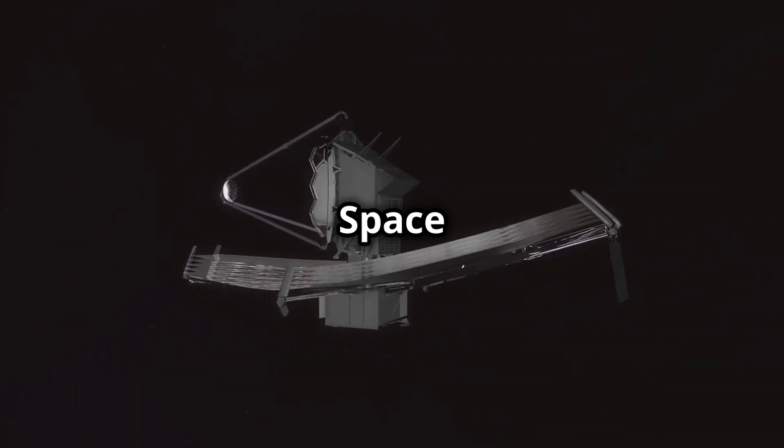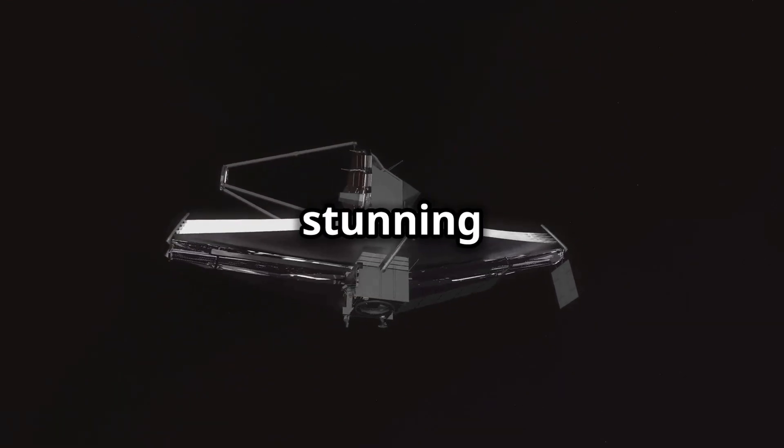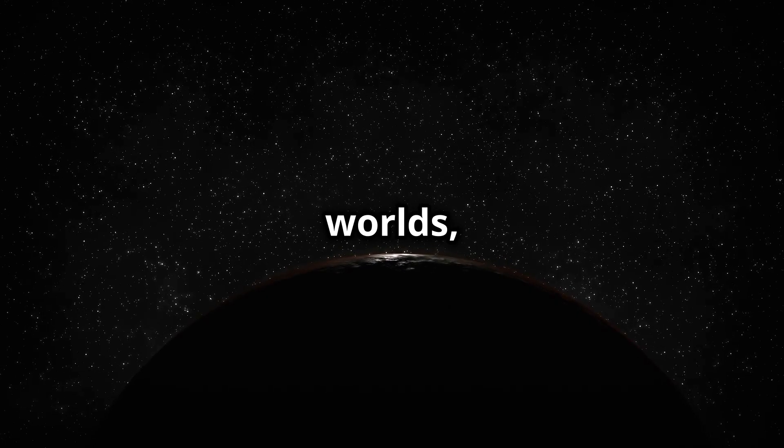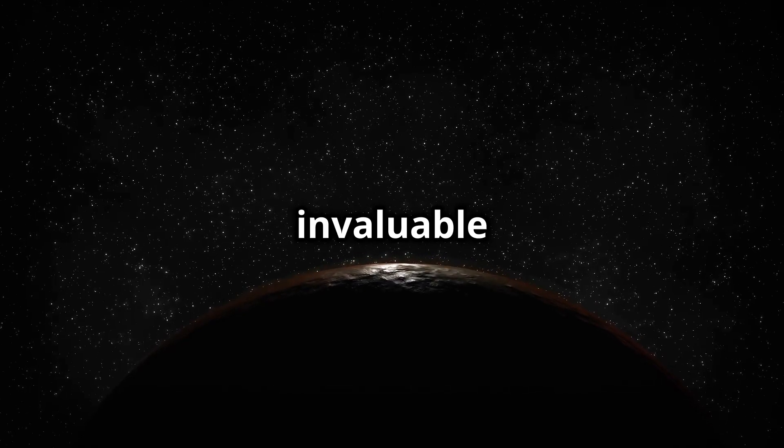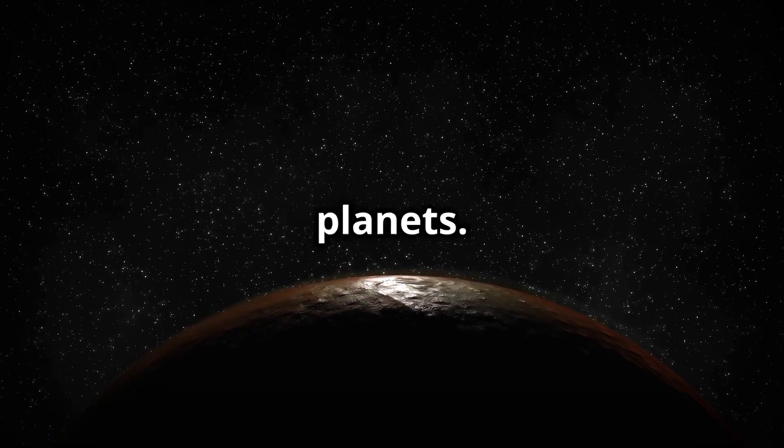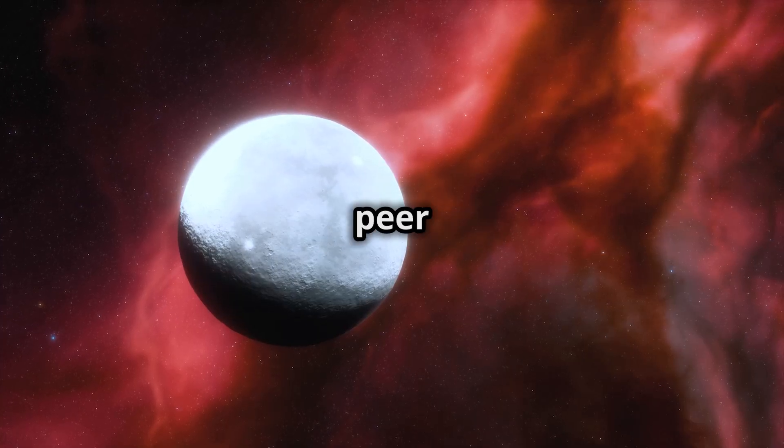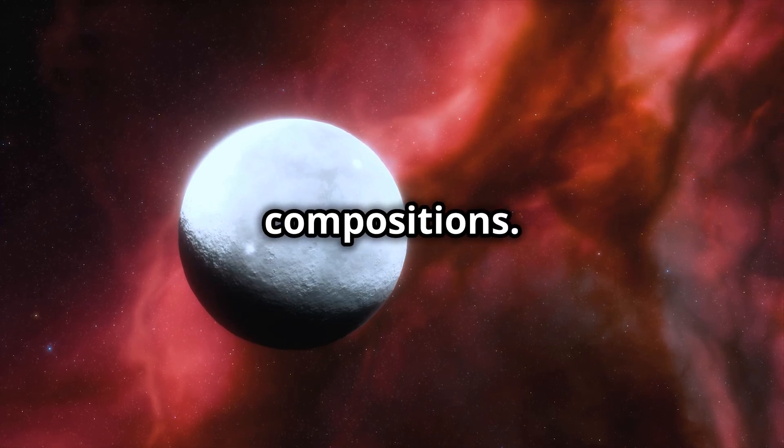Next up, the James Webb Space Telescope has captured images of planets beyond our solar system with stunning clarity. We're talking about seeing landscapes on other worlds. These images are not just beautiful, they provide invaluable data that could help us understand the potential for life on other planets. The telescope's advanced infrared capabilities allow it to peer through cosmic dust and gas, revealing hidden structures and compositions.